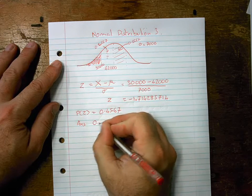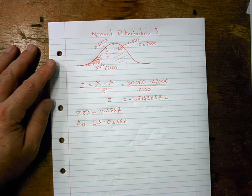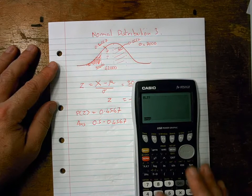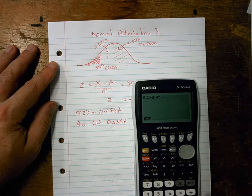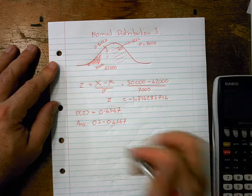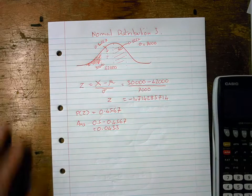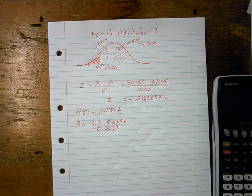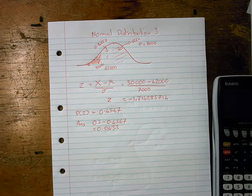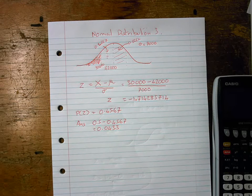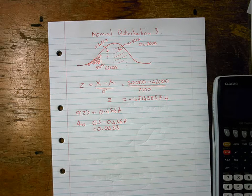So I can say my answer is going to be 0.5 take away 0.4567. I can get my calculator up and just work that out: 0.5 take away 0.4567 is 0.0433. And that is the probability of finding a hard drive that fails before 30,000 hours. That's the answer to the question, and I've done the whole lot in one go. Now that's an achieved question.